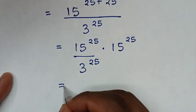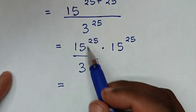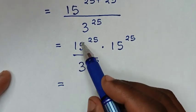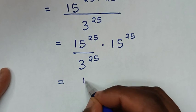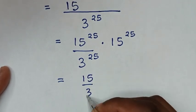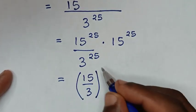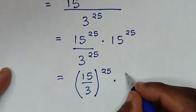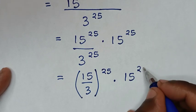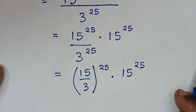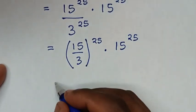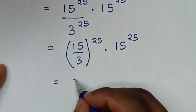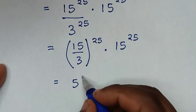Then, as the division of exponents with the same power of 25, we divide the bases: 15 over 3, keeping the same power of 25. In the next step, 15 divided by 3 equals 5, so we have 5 power of 25.